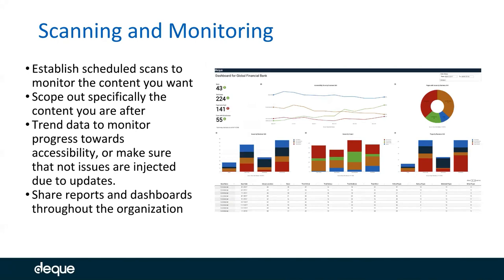For scanning and monitoring on the back end, there are two key features to consider. First, the scanning capability: it needs to establish scheduled automated scans so you can keep an eye on properties without actively watching them — more like a passive smoke alarm. You want a tool that can automate and schedule scans and send out reports or alerts when things go beyond a certain accessibility threshold your organization deems fit. You also want to scope content specifically — scripting capabilities to set up specific screen states, establish session variables, change viewport sizes, get through authentication barriers to scan authenticated portions of your website.